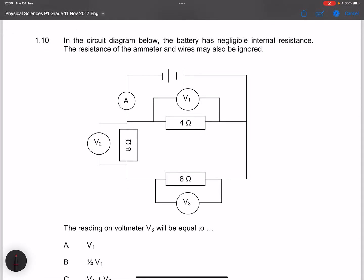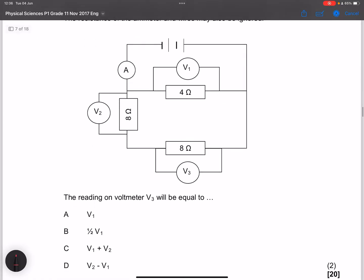Finally, they say in the diagram below, the battery has negligible resistance. The resistance of the emitter and the wires may also be ignored. Please note in this case, they say the reading on the voltmeter V3 will be equal to. Note that when current moves through the circuit, once we get to this node over here, the current will divide, so some of the current would go there and some of the current goes there. Note that the current that goes through the 8 ohm also goes through the other 8 ohm resistor, so which means these two resistors must be in series with each other. And it is the combination of both resistors that is in parallel to the 4 ohm resistor.